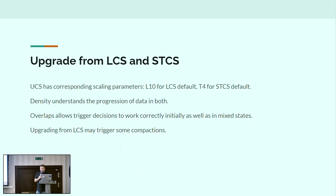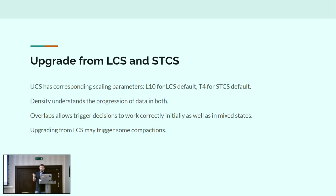The unified compaction strategy understands what the previous compaction strategies — both STCS and LCS — are trying to do when they compact. STCS grows bigger and bigger files; because they're bigger files covering the whole space, they're also bigger in density. LCS, when it compacts, creates the same-size SSTables but spanning smaller and smaller portions of space, so their density also grows. This means UCS can actually take advantage of what the other strategies have done — it can continue their work rather than recompacting, which is something we've had to do previously when switching between compaction strategies.